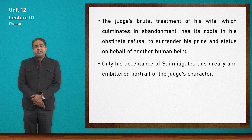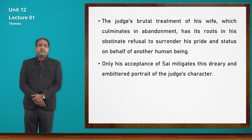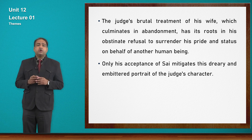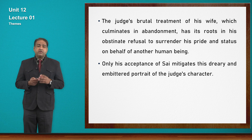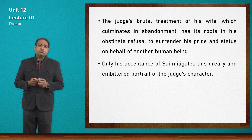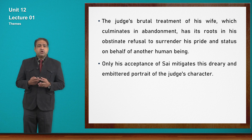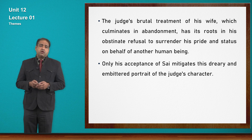Only his acceptance of Sai mitigates this dreary and embittered portrait of Judge's character. In this entire world, the only character accepted by Judge is his granddaughter Sai — because Sai had European manners and knew how to behave like English people. Judge used to beat his wife because she was not behaving like European women, and thus Sai's manners are the reason Judge liked her.